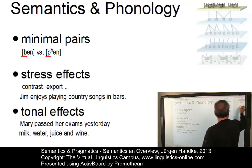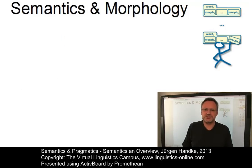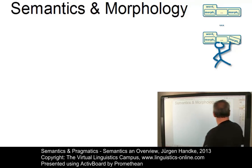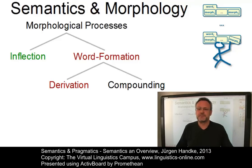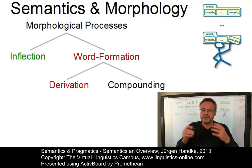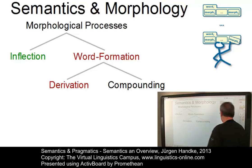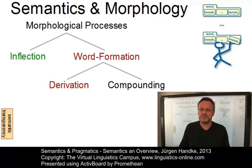Let's look at morphology next. Morphology studies the internal structure of words and how words are built out of smaller components. There are three central processes, but they differ with respect to the degree of semantic transparency of the word forms they produce.